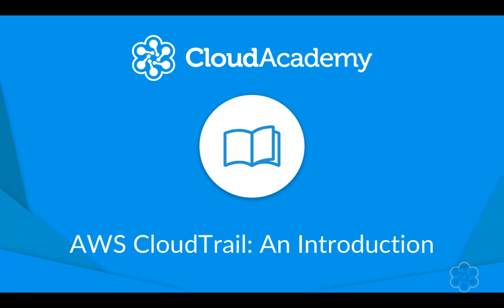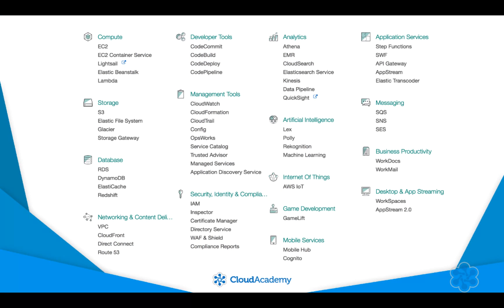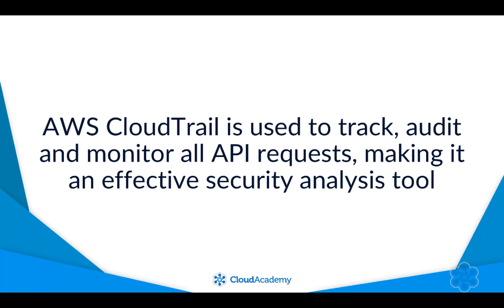Hello and welcome to this course covering AWS CloudTrail. CloudTrail is one of the services that falls under the management tools categorization within the AWS console. Throughout this course I shall explain what the service is, what it does and how it operates, along with its interaction with other AWS services. AWS CloudTrail is a powerful service that is used to track, audit and monitor all API requests made in your AWS account, making it an effective security analysis tool.